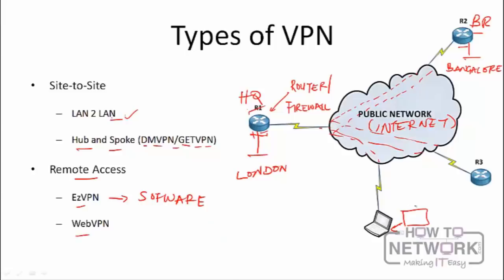For web VPN, it works similarly to Easy VPN except no client software is needed — you simply use a web browser to connect to the VPN and access the same resources. Of course, these require different configuration, which is beyond the ICND2 scope. The goal here is simply to expose CCNA students to the kinds of VPNs available. For deeper learning, you can explore the CCNA Security and CCNP Security syllabi.